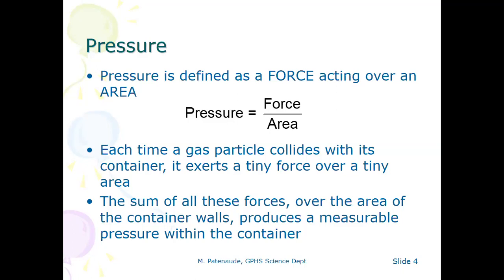Every time a gas particle — a molecule or atom — collides with the wall of the container, that little collision creates a small force acting over a tiny area where the particle hit the wall. So every collision between a particle and the wall creates a tiny amount of pressure. But if you imagine the huge number of particles colliding repeatedly with the walls every second, those little pressures add up to a measurable pressure that we can measure in the lab. The sum of all those forces over the area of the container's walls creates measurable pressure within the container.